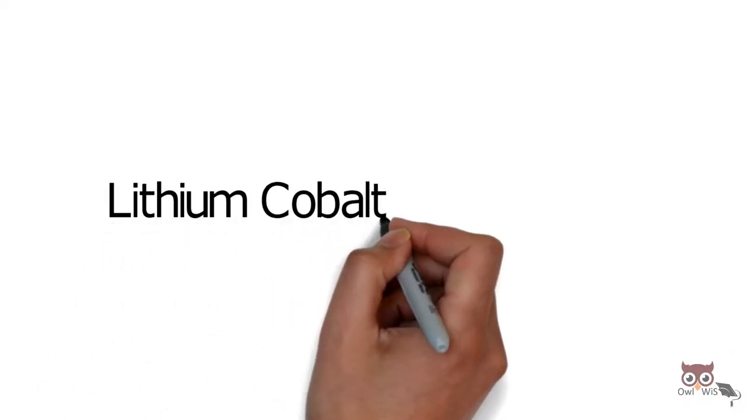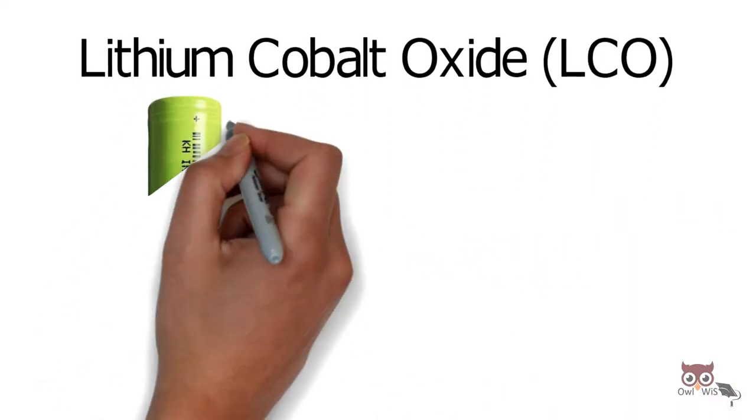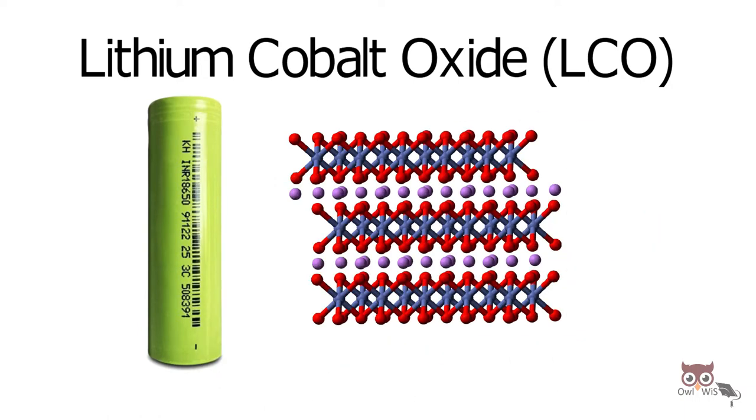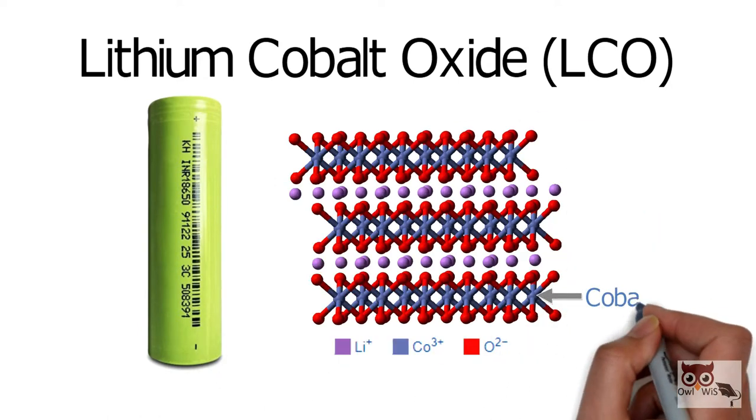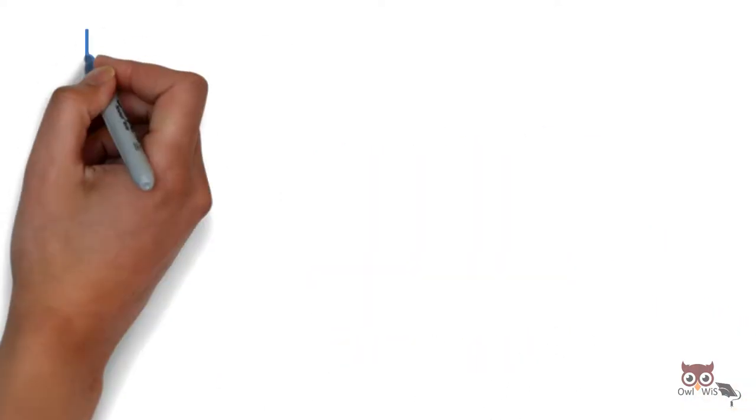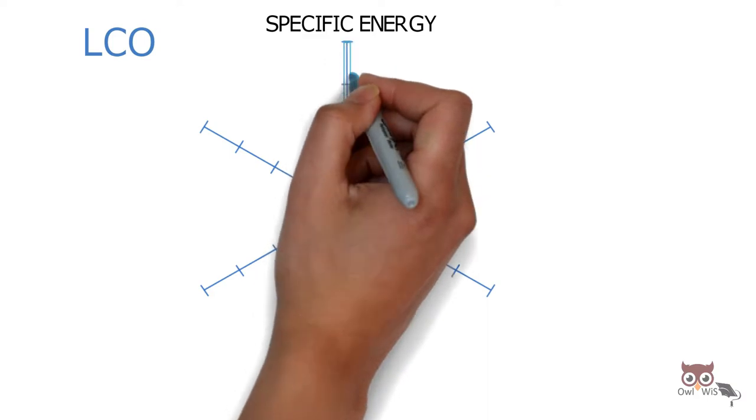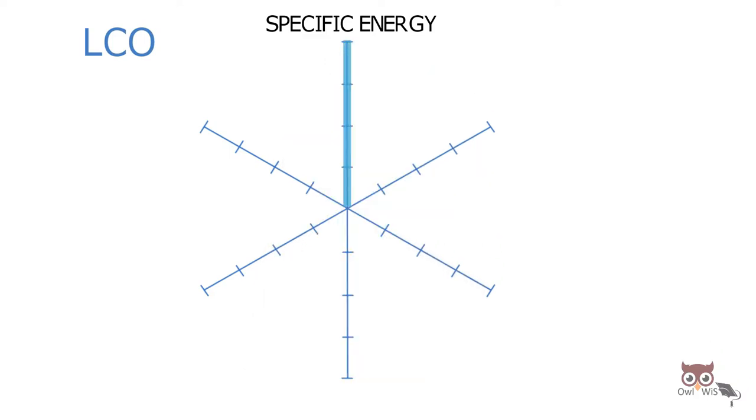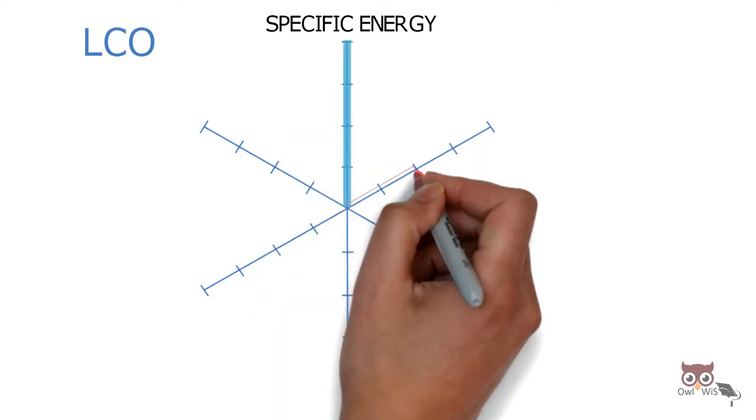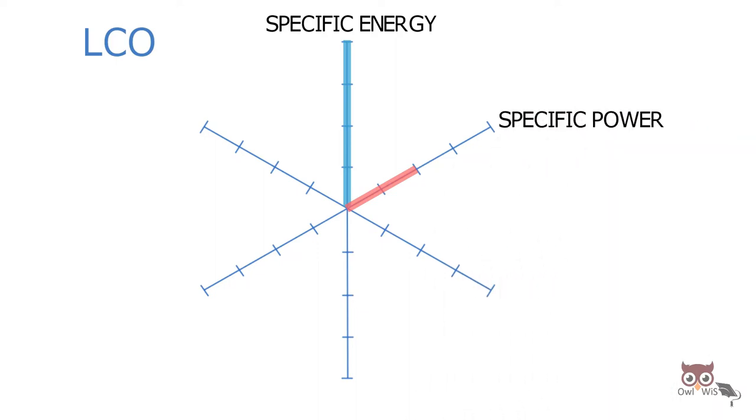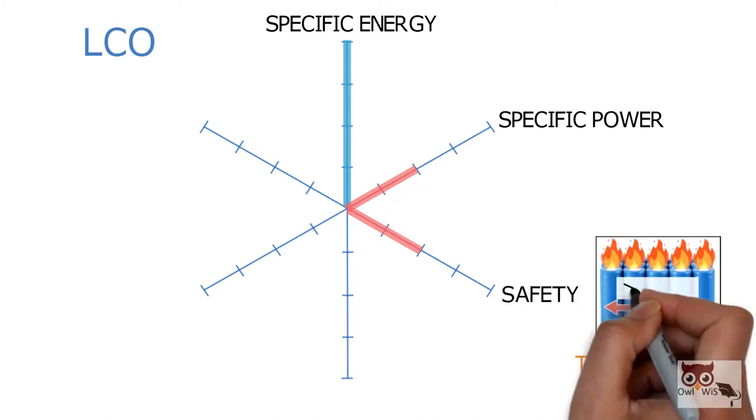Lithium Cobalt Oxide (LCO) uses cobalt as the main active material in its cathode. LCO has high specific energy which allows it to deliver power over a long period, but relatively low specific power. In terms of safety, it's low because of thermal runaway issues, which occur at temperatures greater than 150 degrees Celsius.